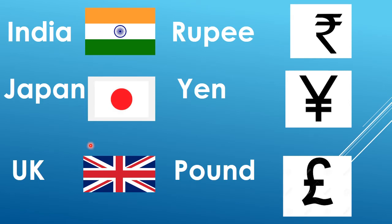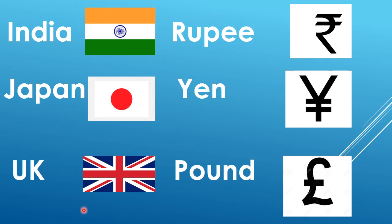Next country is Japan. Japan is the flag of Japan. Japan's currency is yen. And this is Japan's currency symbol. Last country is the UK, the United Kingdom. This is the flag of United Kingdom. The currency of UK is the pound. And this is the currency symbol of the UK pound.